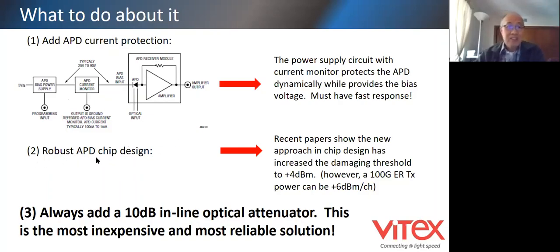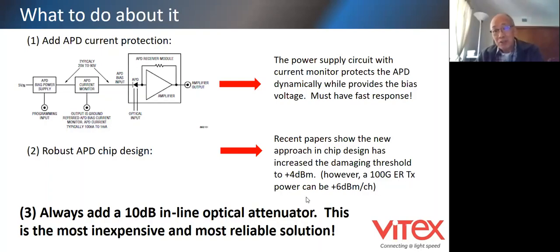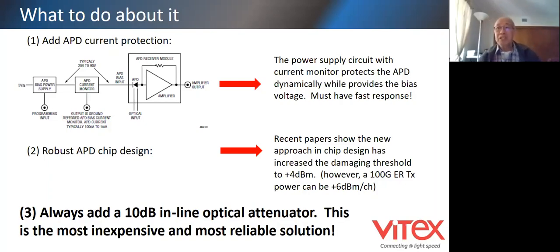The second point is that the APD chip design has to be robust. Nowadays I see the damage threshold for some internal designs increased to plus 4 dBm, which is the highest I've seen in a transceiver spec. But on the other side, a 10G ER transmitter output can be as high as plus 6 dBm. So if you connect back to back - transmitter to receiver - you damage the APD immediately. Sometimes the damage can be latent, meaning it won't happen immediately but will happen later on. That's the danger.